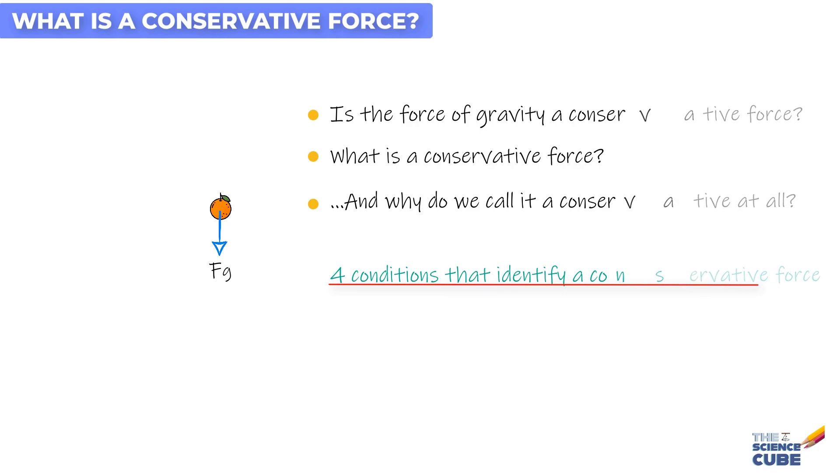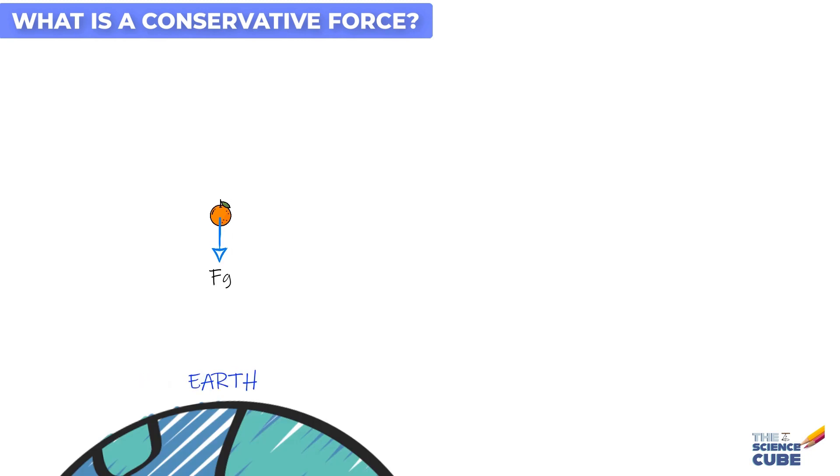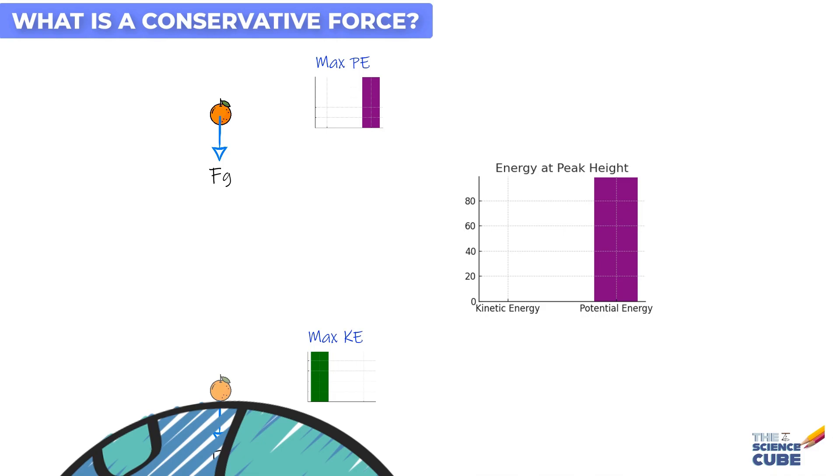So when we see an orange flying up in the air, we say the system under study is Orange Earth System. So initially, the system setting is Orange is on Earth. But when we give a certain amount of kinetic energy to the orange, it starts moving away from the Earth. And now we say the system setting is constantly changing due to the changing distance between the orange and the Earth. And the final setting is Orange is at the peak of its flight.